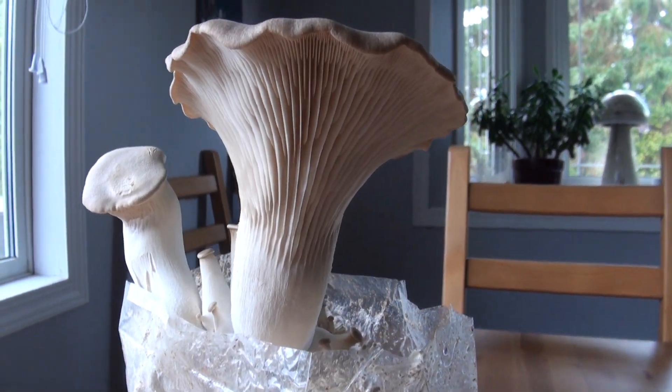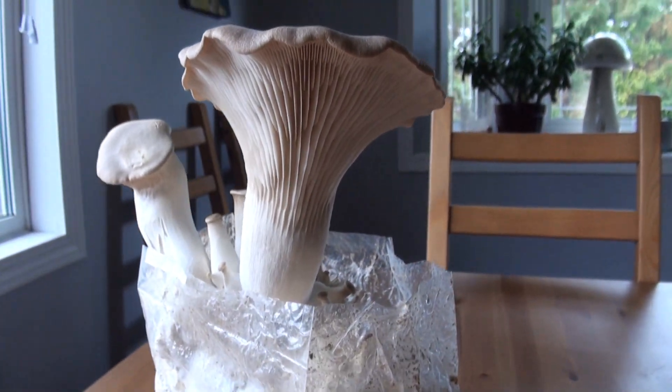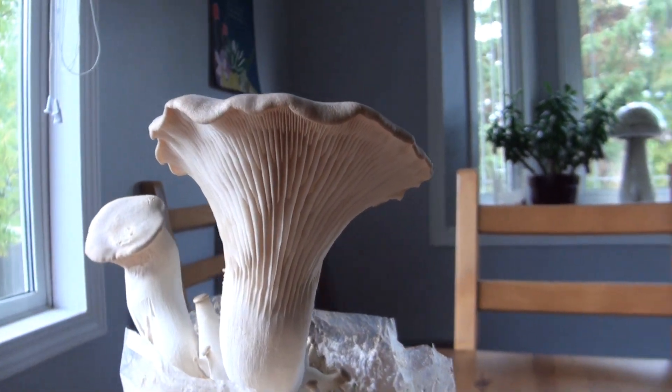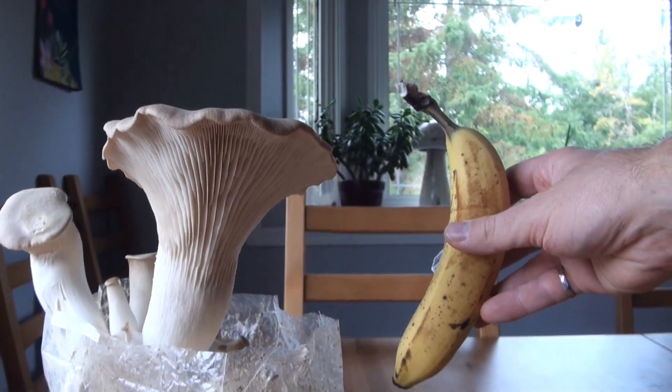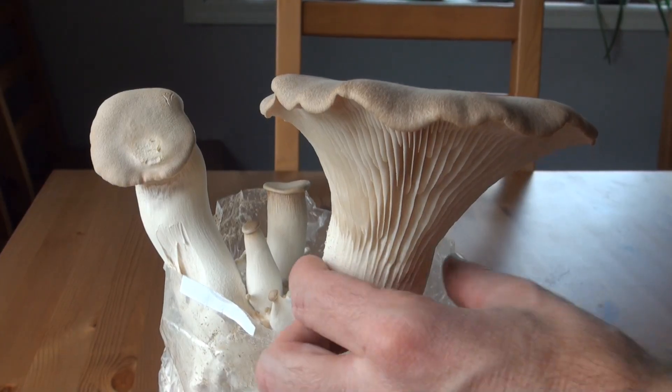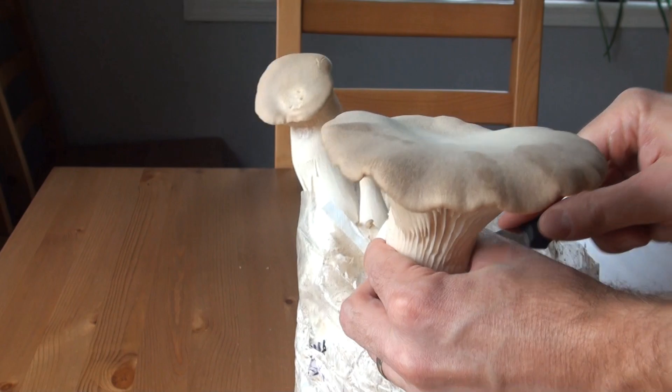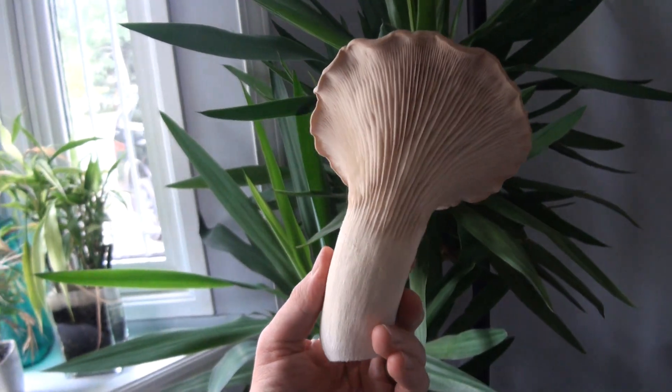So this big guy is the mushroom that we're going to clone today. It's a king oyster mushroom that's growing on master's mix and it's actually quite large. So I'm just going to go ahead and cut this mushroom off the block. I definitely let this one grow out a little bit more than when I would usually like to harvest king oysters, but that's okay because we're going to clone it and I'm not going to be eating it anyways.